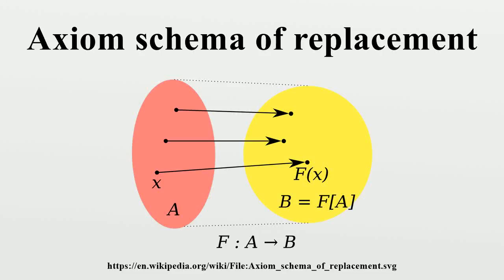In set theory, the axiom schema of replacement is a schema of axioms in Zermelo-Fraenkel set theory that asserts that the image of any set under any definable mapping is also a set. It is necessary for the construction of certain infinite sets in ZFC. The axiom schema is motivated by the idea that whether a class is a set depends only on the cardinality of the class, not on the rank of its elements.